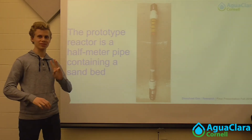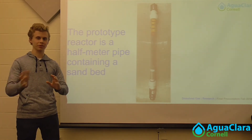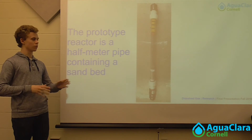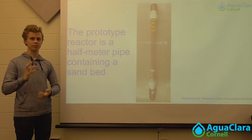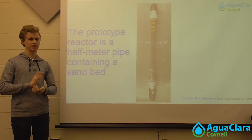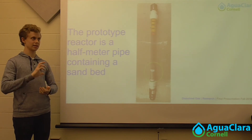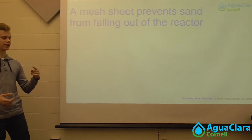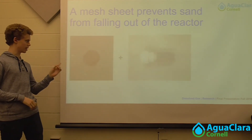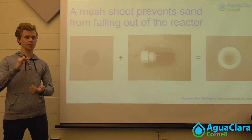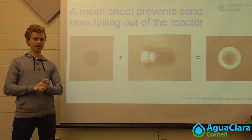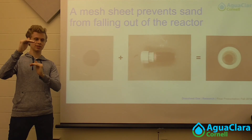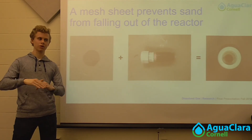Hello, I'm Tommy. I'm the third member of the dissolved gas sub-team, and now that we've laid all the groundwork with the theory and principles that Isaac and Kara discussed, let's talk about the prototype that we built. We built a half-meter long prototype reactor using a PVC pipe. It's capped at both ends with flow components that enable influent and effluent tubing to be connected, and it contains a 70 milliliter sand bed of silica sand, indicated by the green circle. A mesh sheet is installed in the bottom cap to prevent the sand from falling out. We do not have mesh at the top because when the sand fluidizes, the sand bed does not expand significantly, so we don't need to worry about the sand rising out of the reactor.